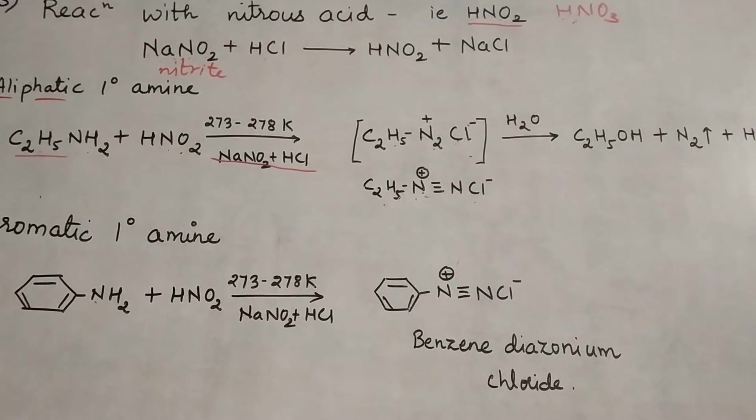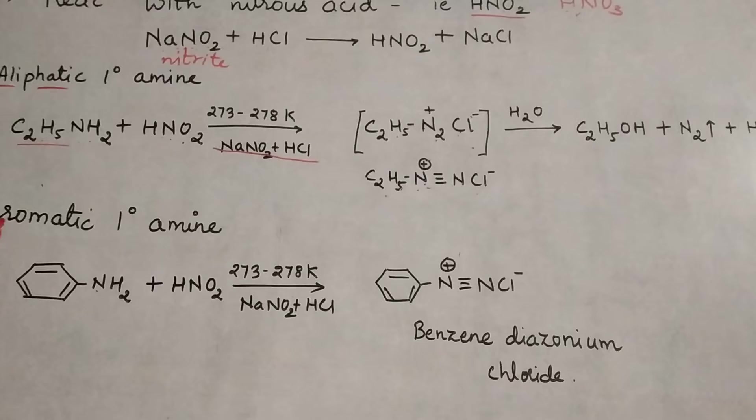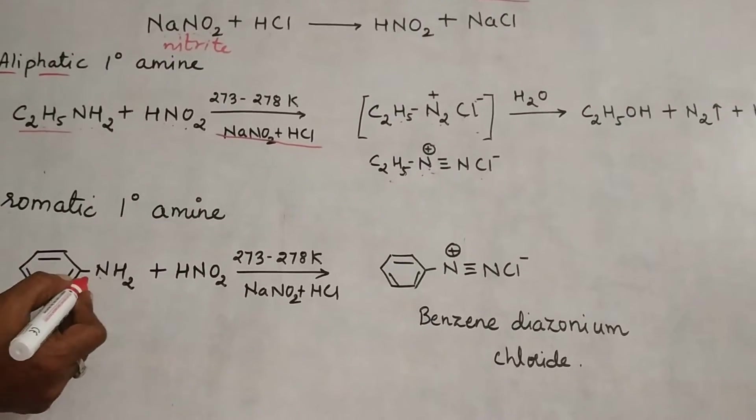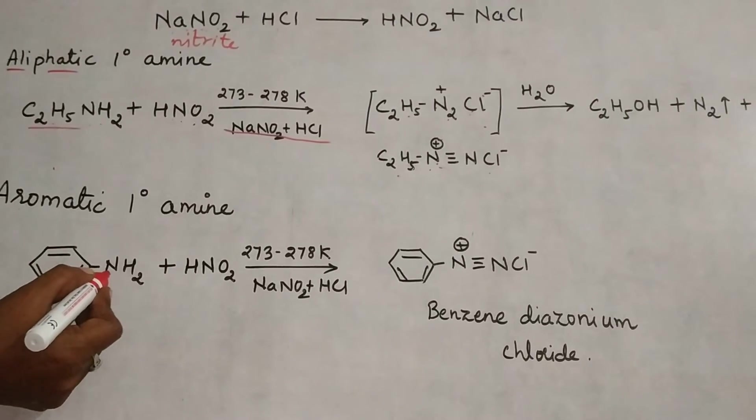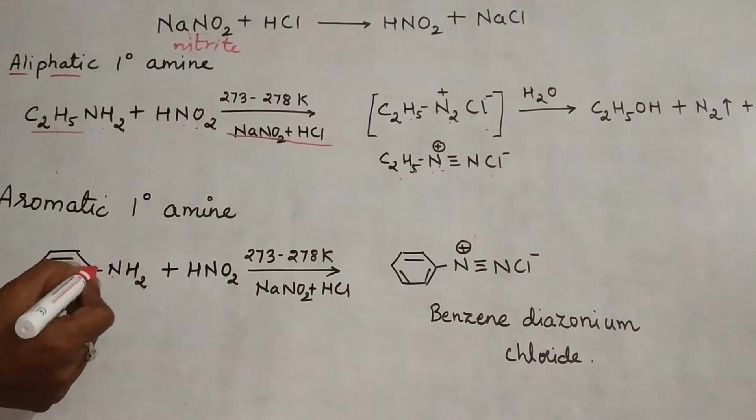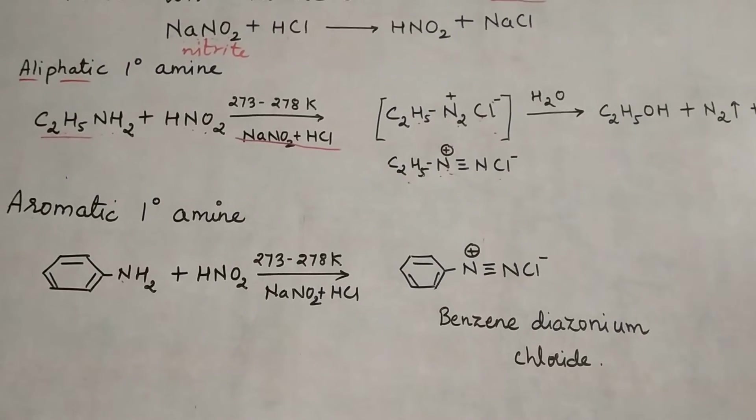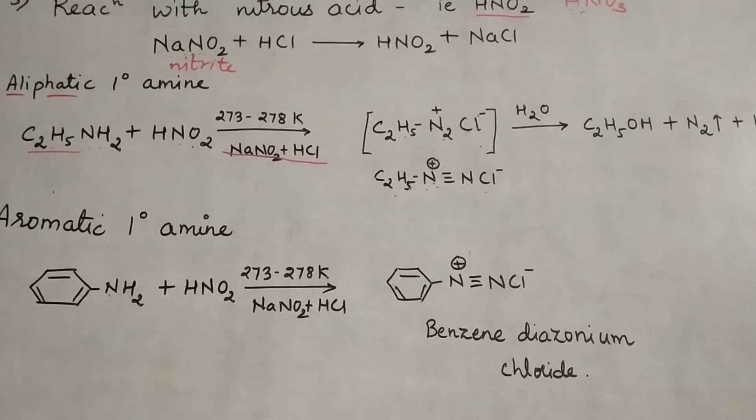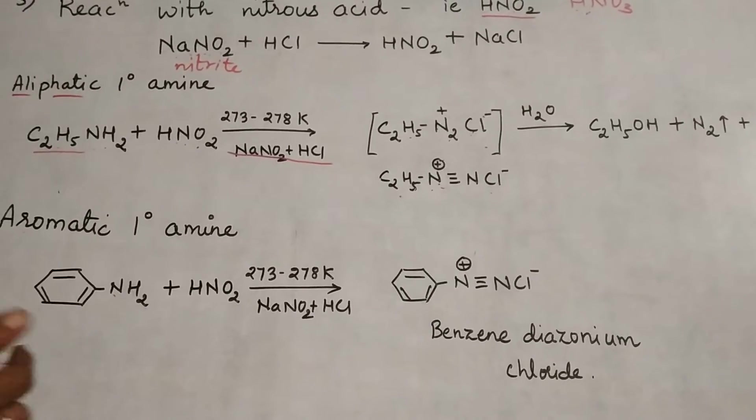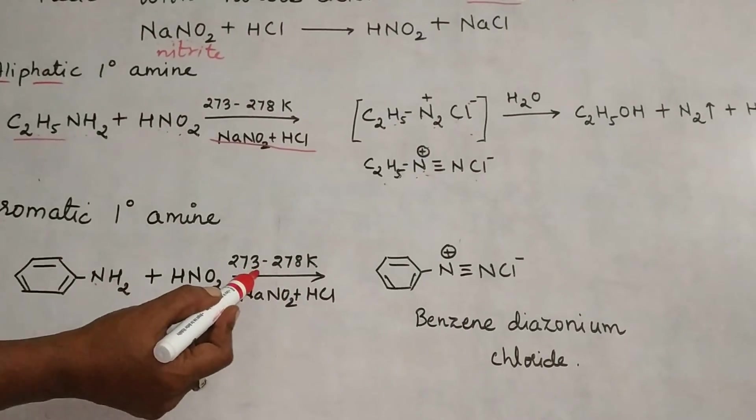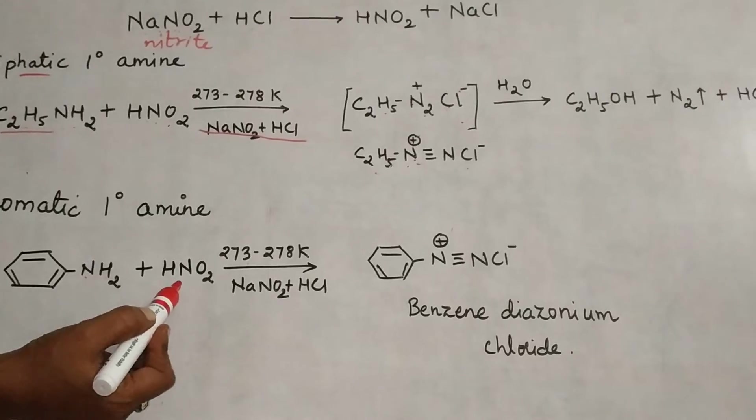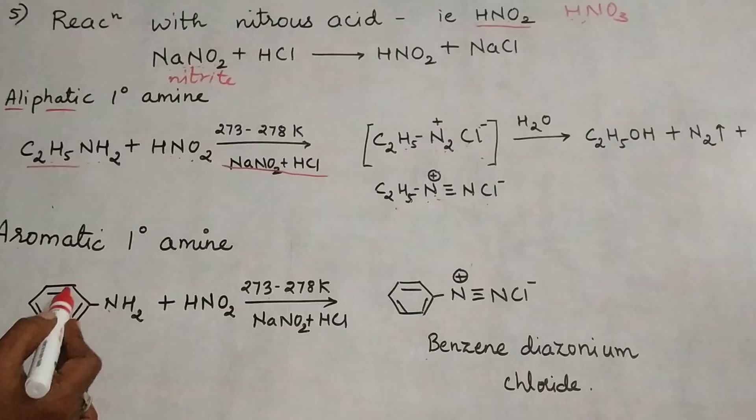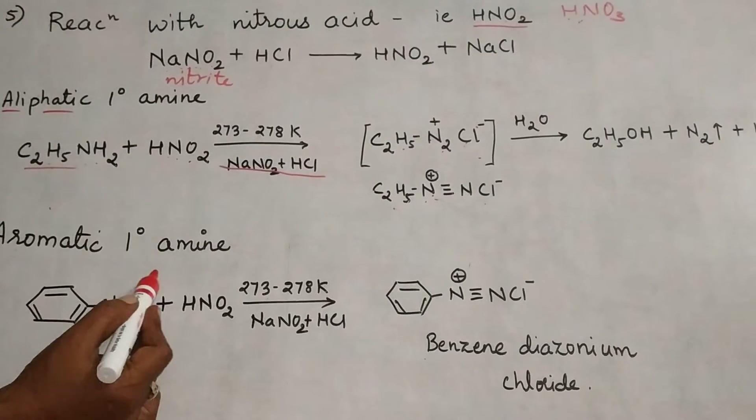Next is the same reaction with nitrous acid, but with an aromatic primary amine, aniline. In the benzene ring, nitrogen is directly attached with an NH2 group. Benzenamine is the IUPAC name; aniline is the common name. Treated with NaNO2 and HCl in cold conditions, it generates nitrous acid, forming benzene diazonium chloride.